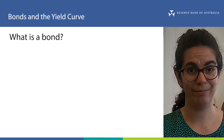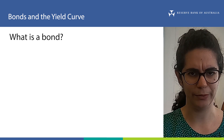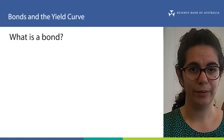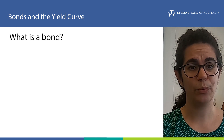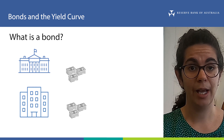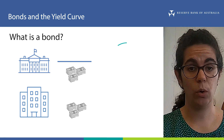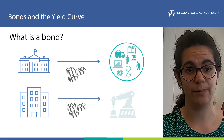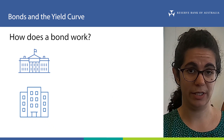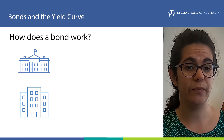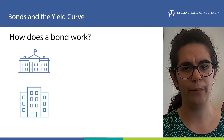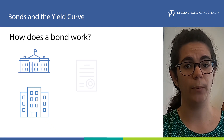So to start, what is a bond? A bond is quite similar to a loan. It starts with a government or a business who needs to borrow some money, perhaps to pay for government spending or a new investment. Rather than borrow this money from an individual or from a bank, they might instead go to the bond market and issue a bond.